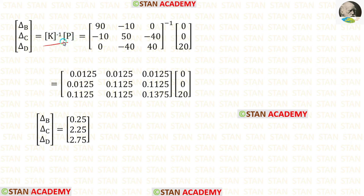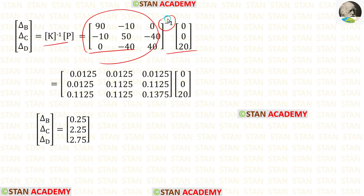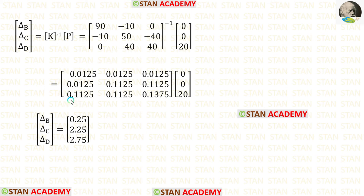We have found both the K matrix and P matrix. Let us apply them. For the K matrix we need to find the inverse. We can enter all values into the calculator to get the inverse — if you do not know how, see the link in the description below to watch the tutorial video. Then we multiply the two matrices, and after multiplying we get delta B, delta C, and delta D.